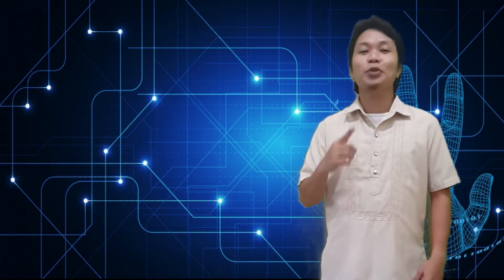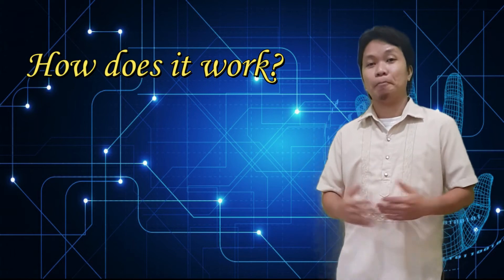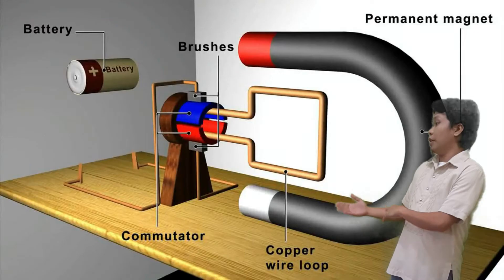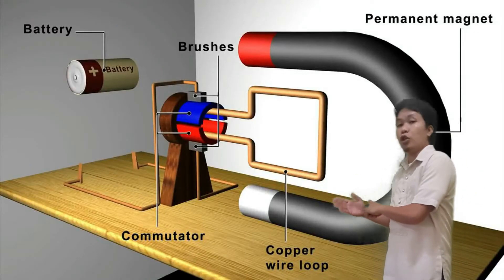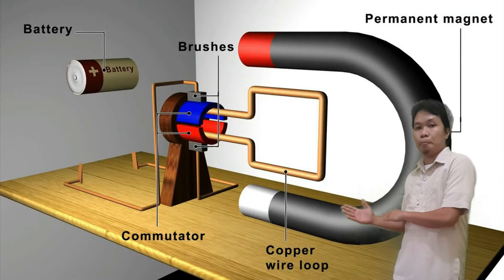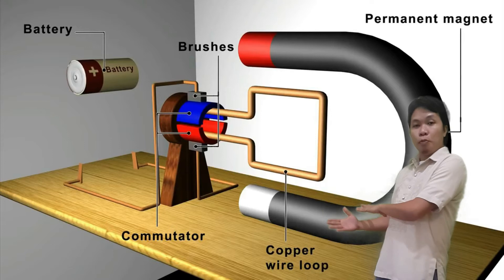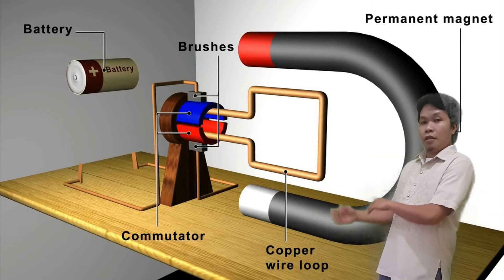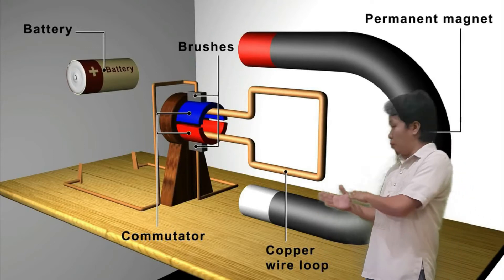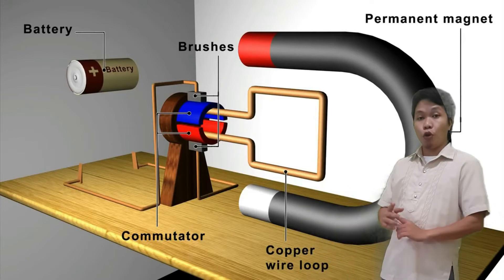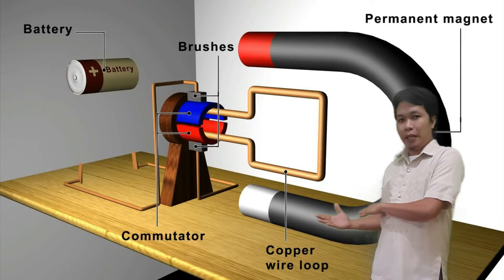And this time, we are going to talk about how does it work. As you can see here, this is the inside loop of a simple electric motor. We have a magnet, a loop of copper wire, a commutator, brushes, and a source of electrical energy, which is the battery.